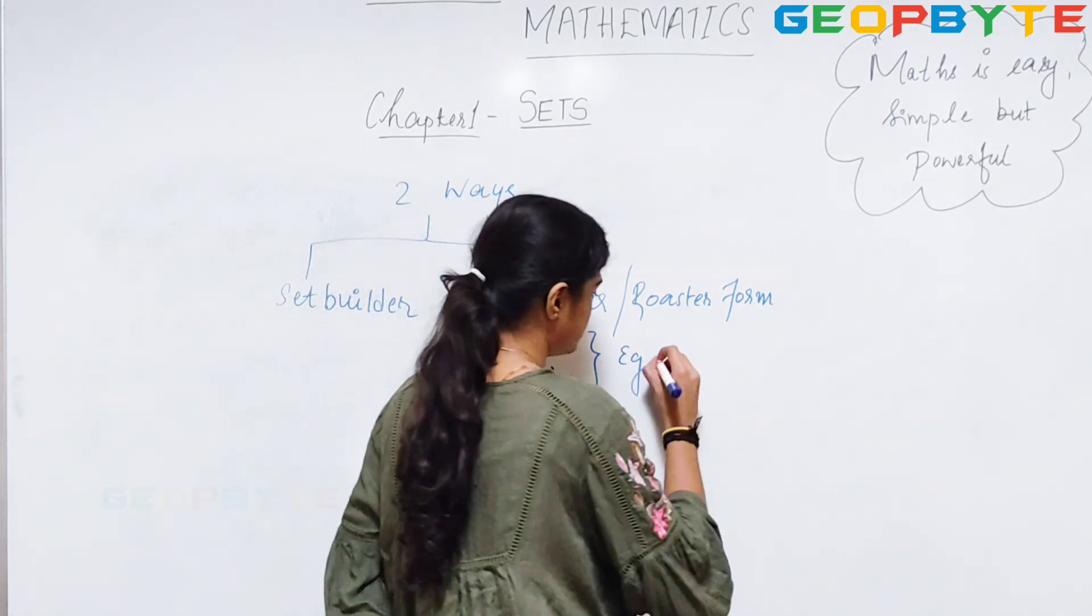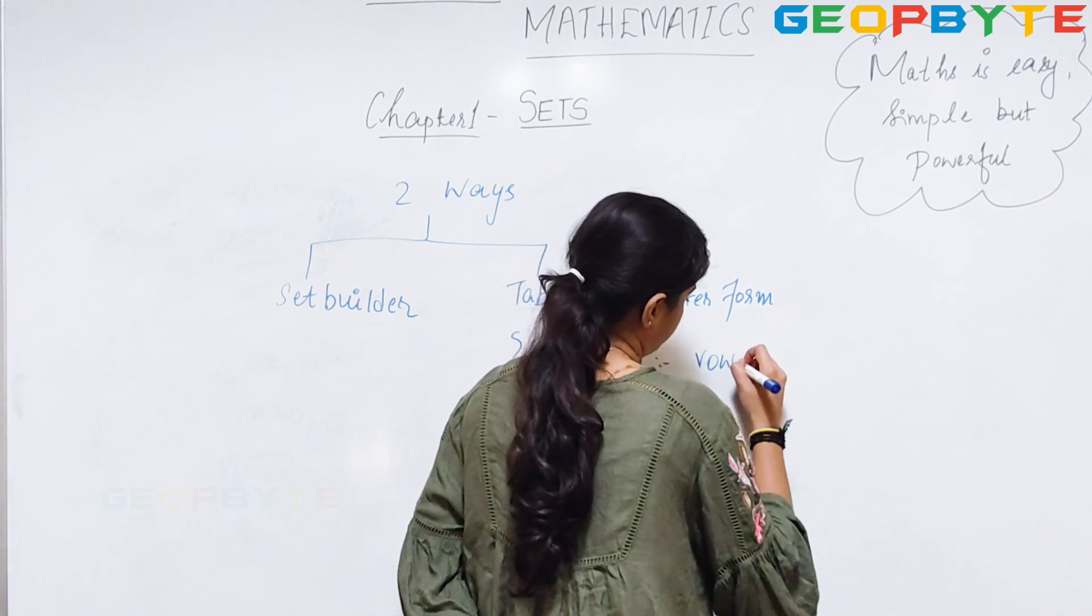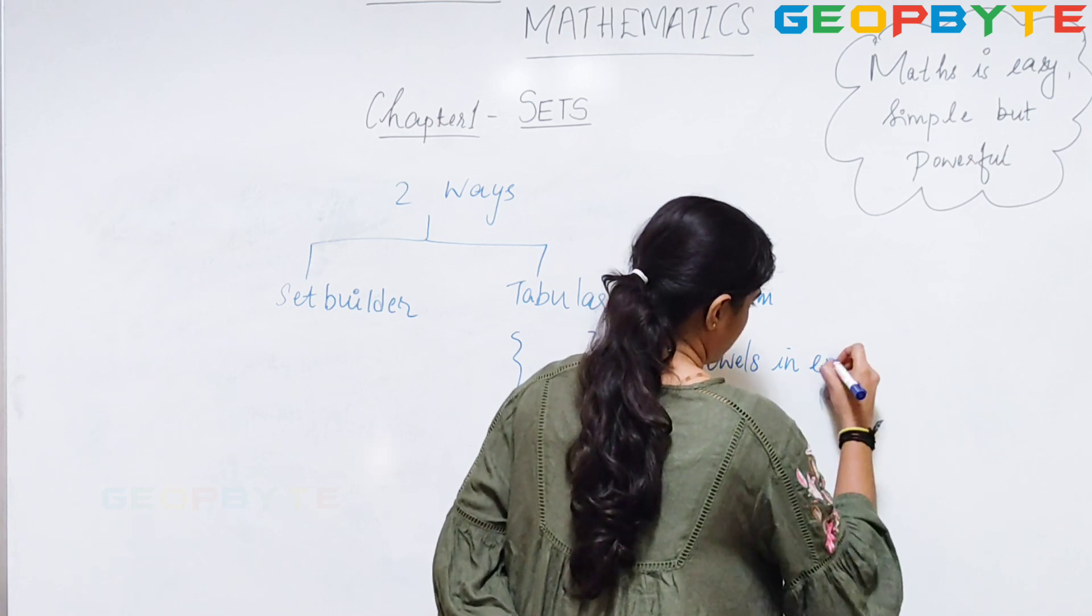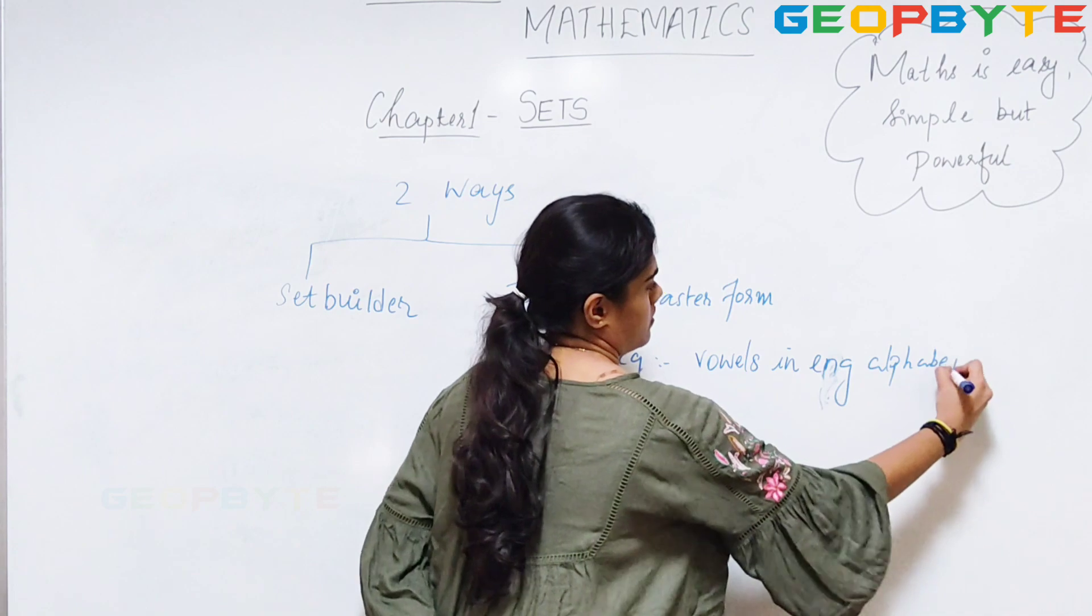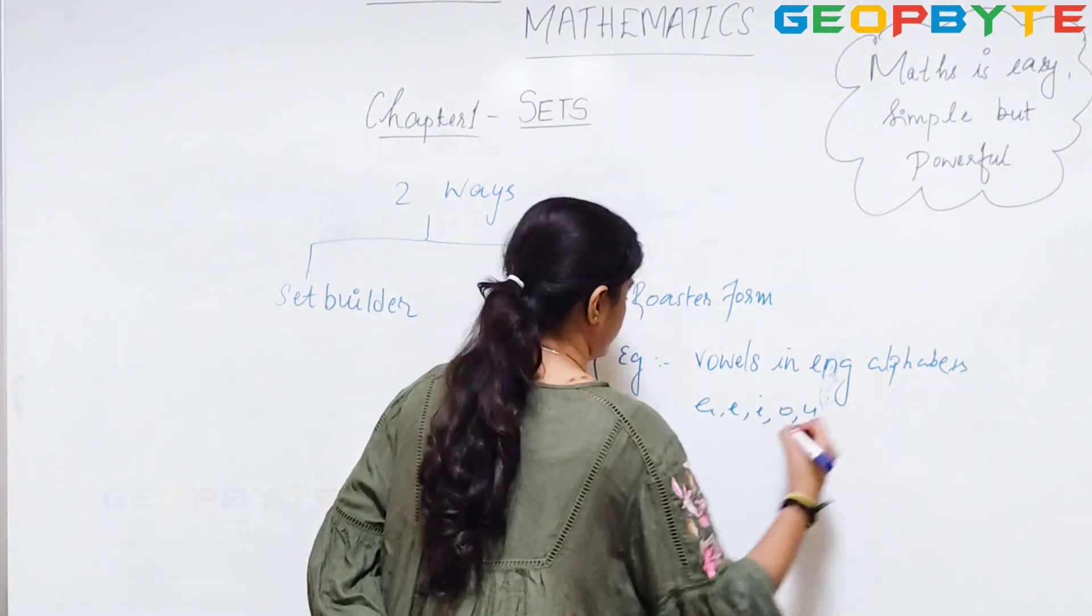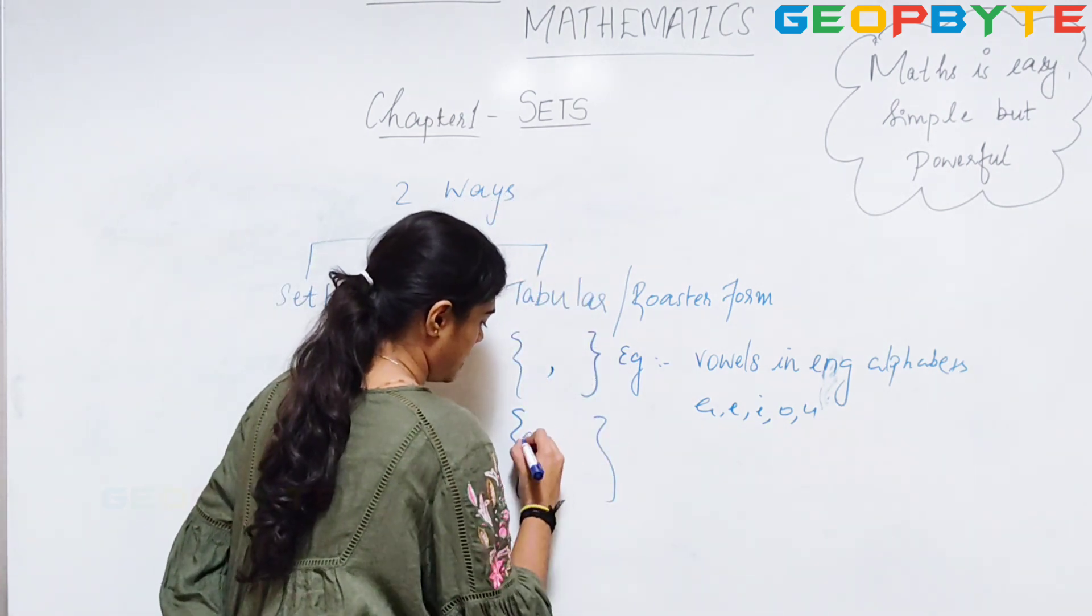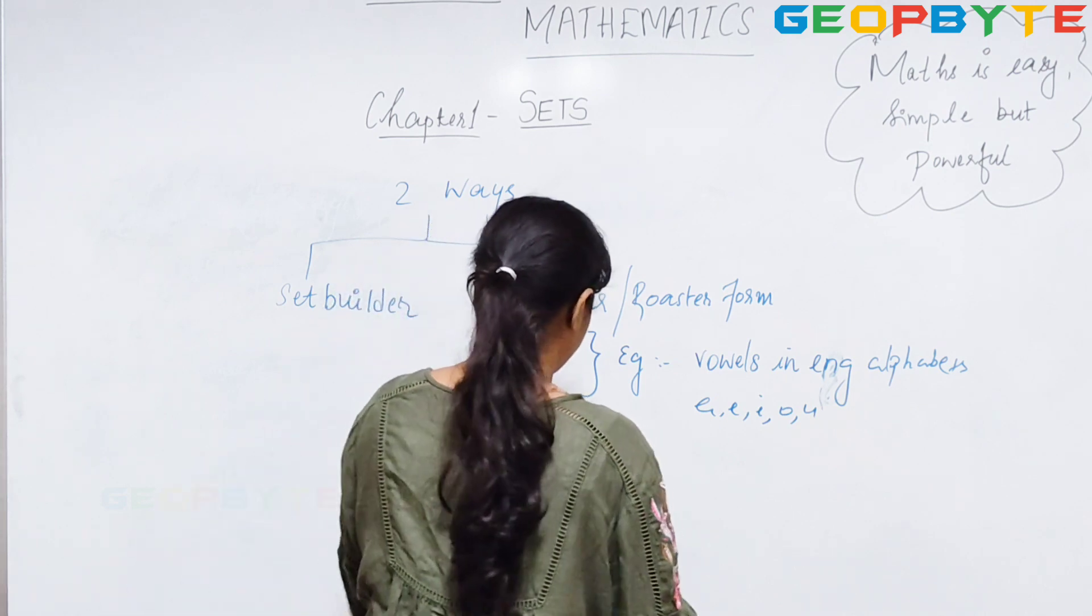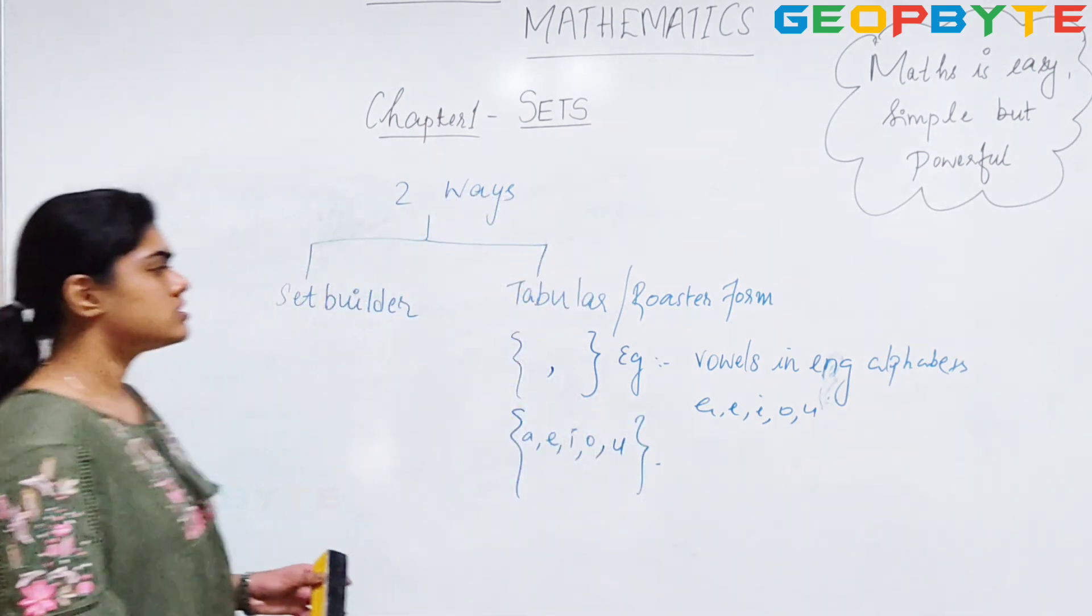For example, vowels in English alphabets A, E, I, O, U. How will I represent in tabular roster form? A, E, I, O, and U.